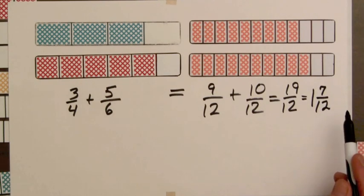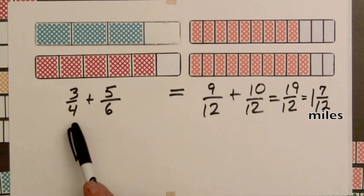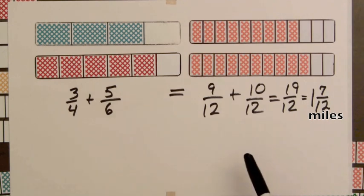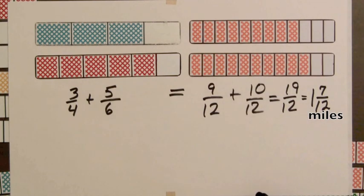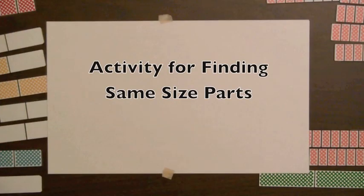So over the two day period, the road crew has paved one and 7/12 miles. So if two fractions have different denominators, we replace them by fractions having the same denominator. That is, by fractions whose bars have the same size parts.